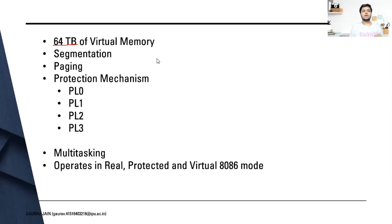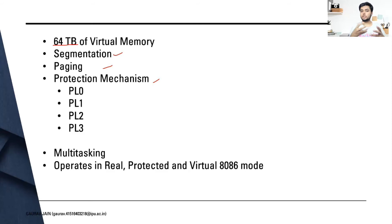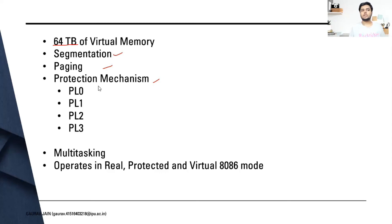The I386 processor had the properties of segmentation, paging, and a protection mechanism. All three made the system more secure, more advanced, and faster in implementation. The protection mechanism had various privilege levels: PL0, PL1, PL2, and PL3 — we'll be seeing those in detail.